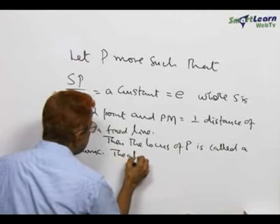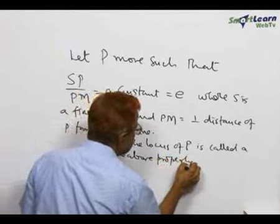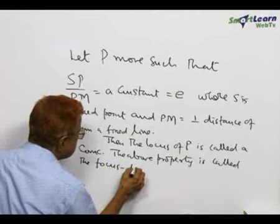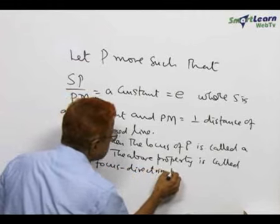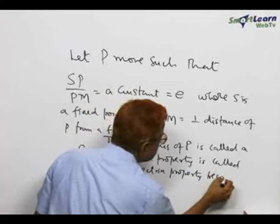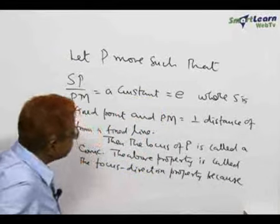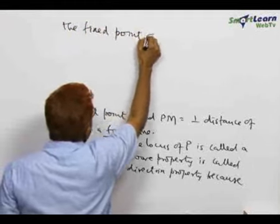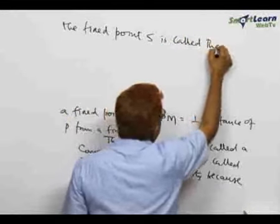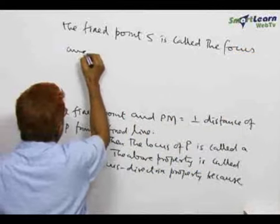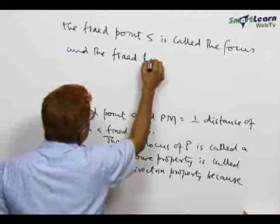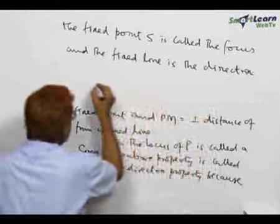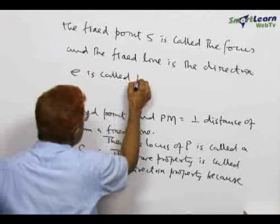The above property is called the focus-directrix property, because the fixed point S is called the focus and the fixed line is the directrix. E is called the eccentricity of the conic.